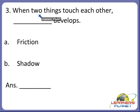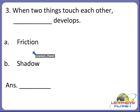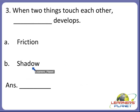When two things touch each other, dash develops. What develops when two things touch each other? Is it A — friction, or B — shadow? When two things touch each other, friction develops. So A is the correct answer.